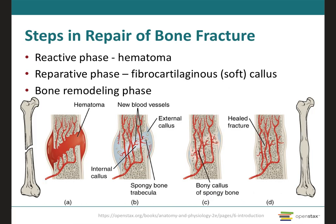The repair of a bone fracture involves three phases: the reactive phase, the reparative phase, and the bone remodeling phase. In the reactive phase, blood vessels near the site of fracture rupture, causing blood to leak out and form a mass of blood around the fracture site. This clotted mass is called a fracture hematoma — where 'hemat' means blood and 'oma' means tumor — and it usually forms around six to eight hours after the injury.